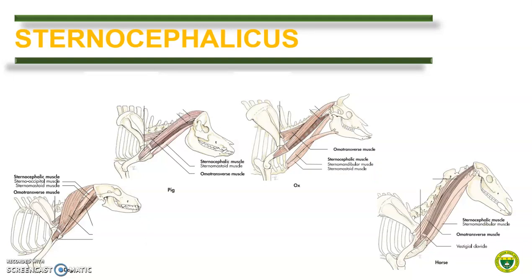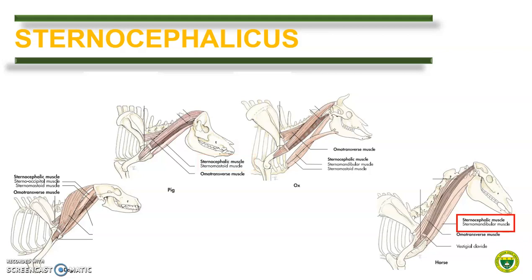Next, we compare the sternocephalicus muscle. This muscle originates from the sternum, particularly at the manubrium or the first sternibra, and is inserted at the head, thus with the name sternocephalicus. Depending on the species, it is inserted at different head structures, so variation in the name exists. In the dog, the insertion is divided into two: one is the mastoid process, thus named sternomastoidus, and the other is the occipital bone, hence sternooccipitalis. In the pig and in the horse, the muscle is undivided. In the pig, it is inserted only at the mastoid process, having only sternomastoidus. While in the horse, it is inserted at the angle of the mandible, thus having the sternomandibularis. In ruminants, it is inserted at the mastoid process and additionally in the mandible, thus with sternomandibularis as well.